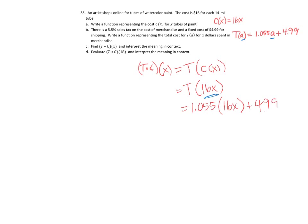And what's the meaning of that? The input, x, is the number of tubes of paint, and then T is my total cost. So this is the total cost for buying x tubes of paint.